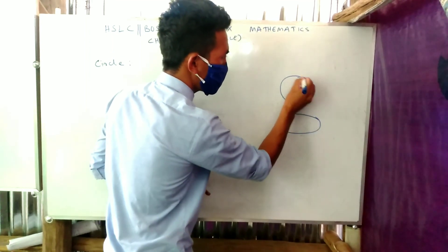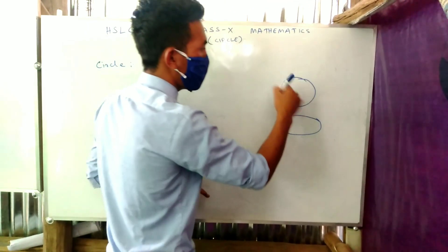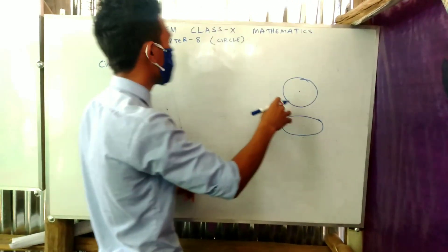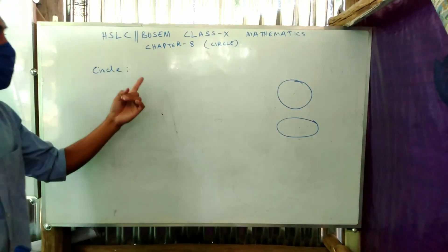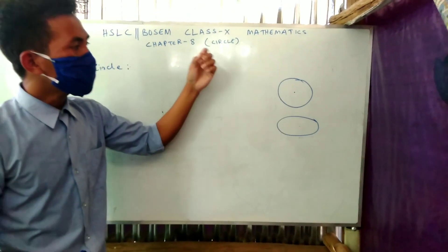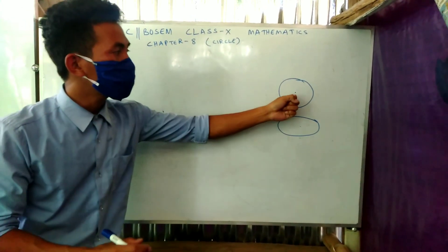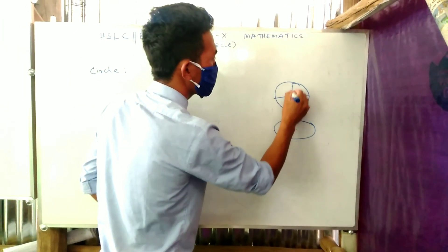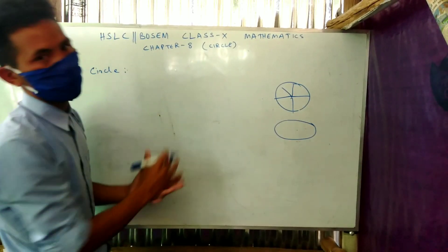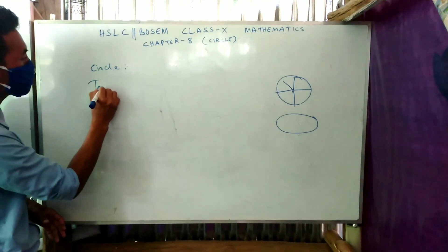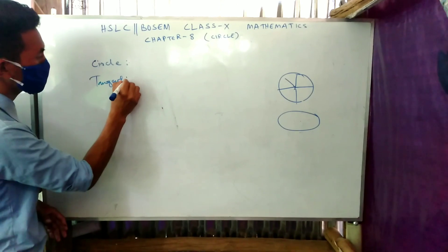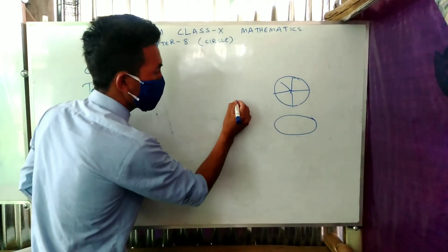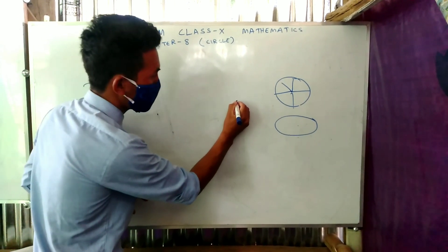A circle is a collection of points which are equidistant from a fixed point called the center.